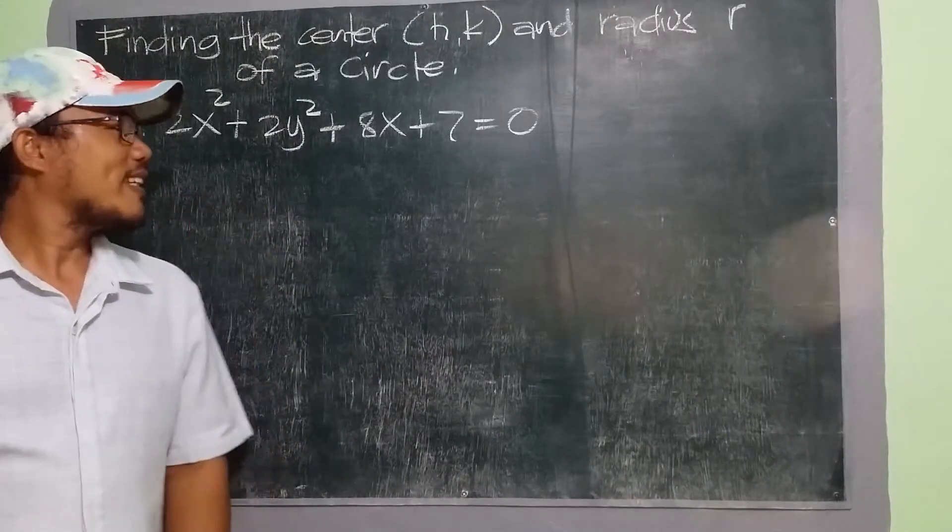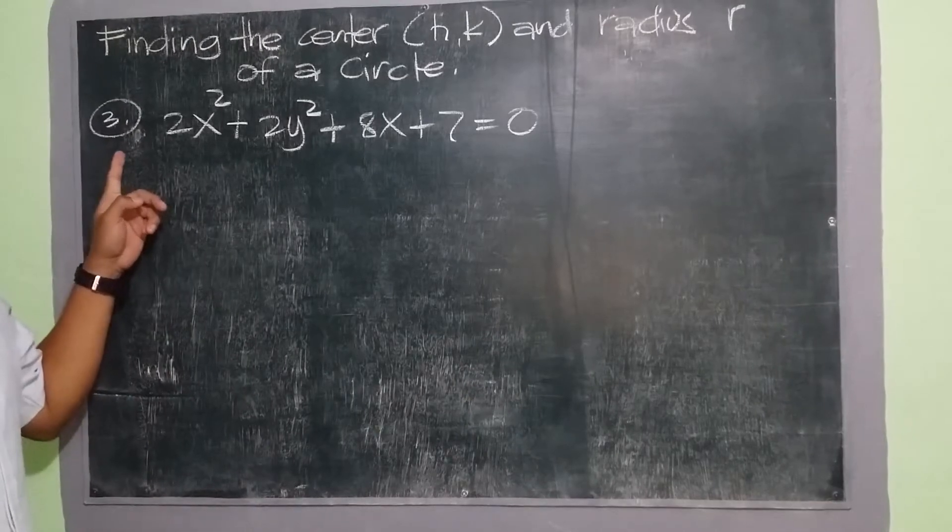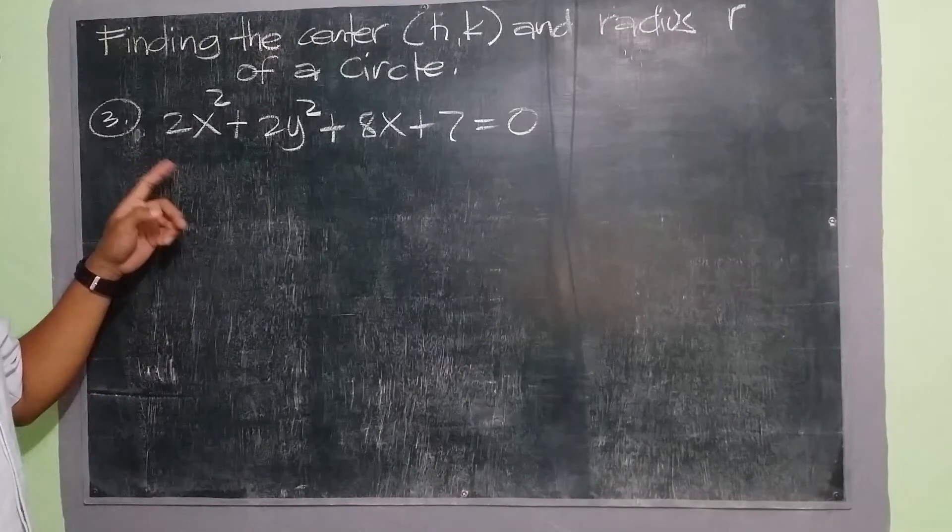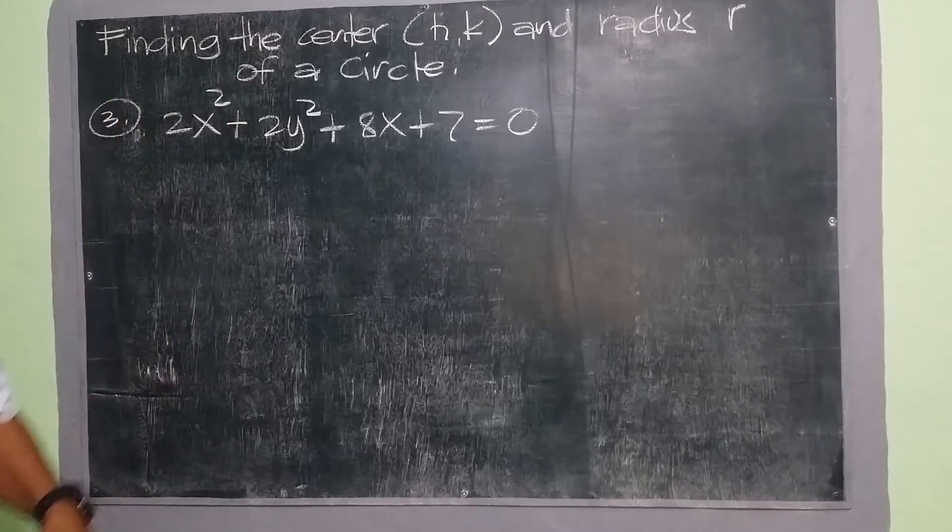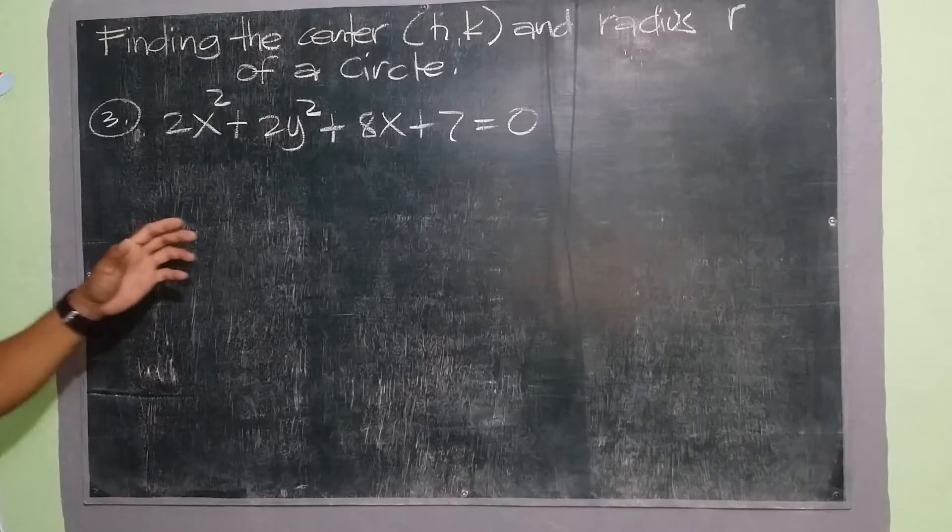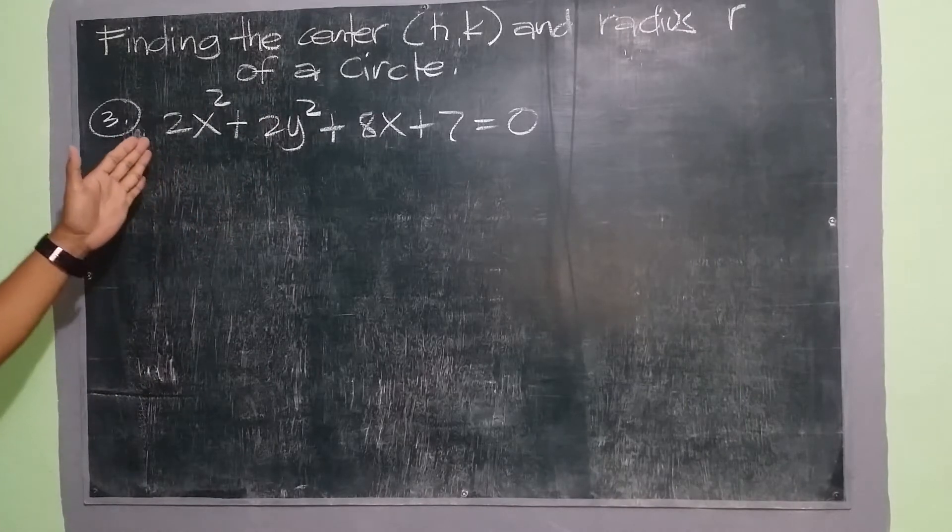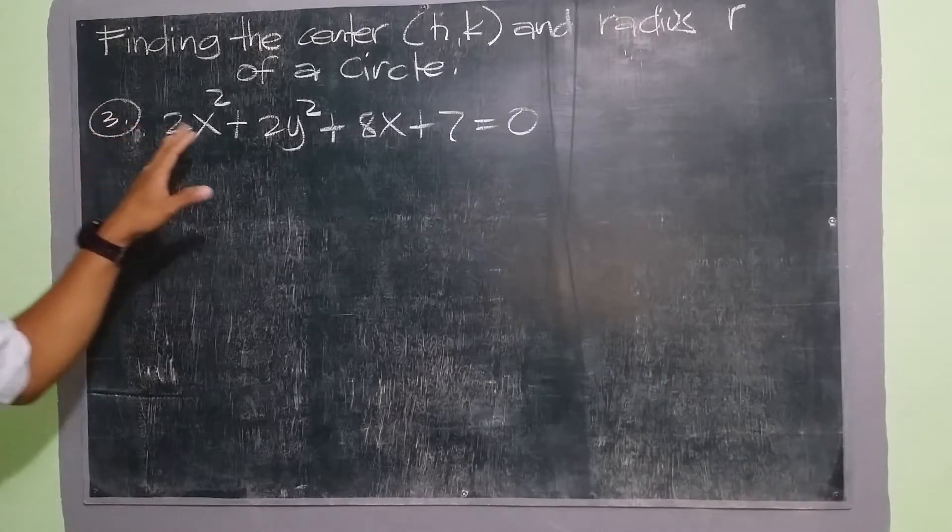Hello once again. Now we're back. This is example number 3, since we already have previously our example 1 and 2 in finding the center (h,k) and the radius r of a circle. Now in this case, in our example number 3, we have this given general form, general form or an equation of a circle.